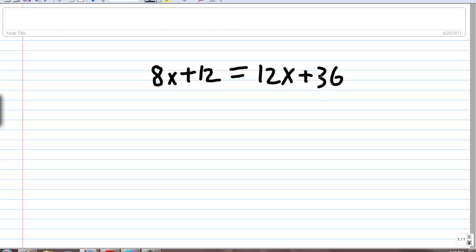First thing we want to do here is get rid of this 12 component on the left side. We'll handle dealing with this 12x after we get 8x alone on the left side. So first thing we're going to do is subtract 12 from both sides, and then we will have 8x is equal to 12x plus 24.